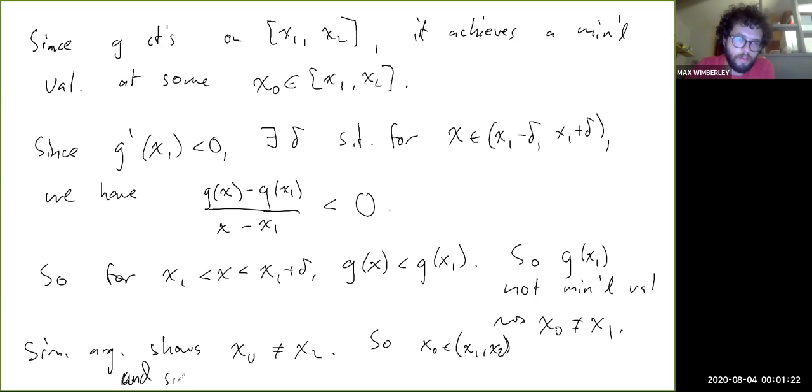And since g(x₀) is minimal, g'(x₀) is zero. So f'(x₀) is c, completing the proof of the intermediate value theorem for derivatives.